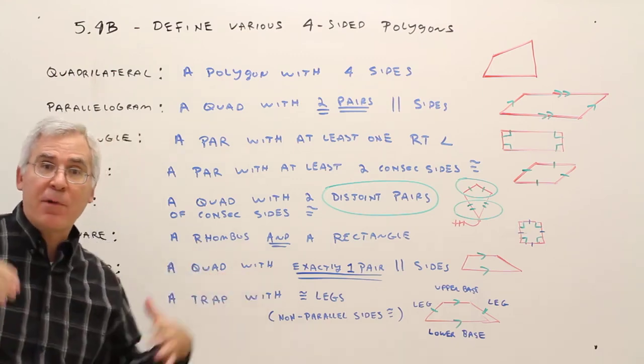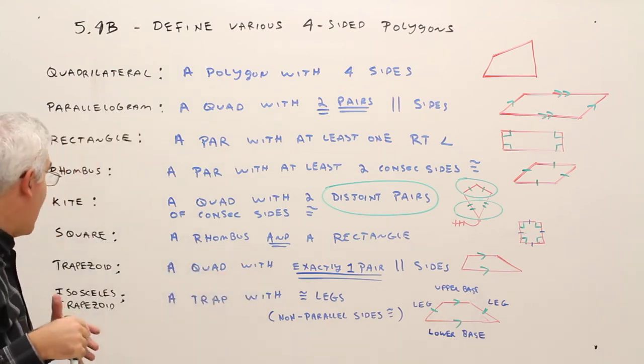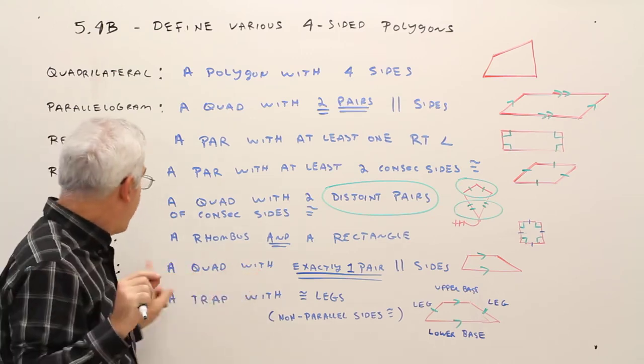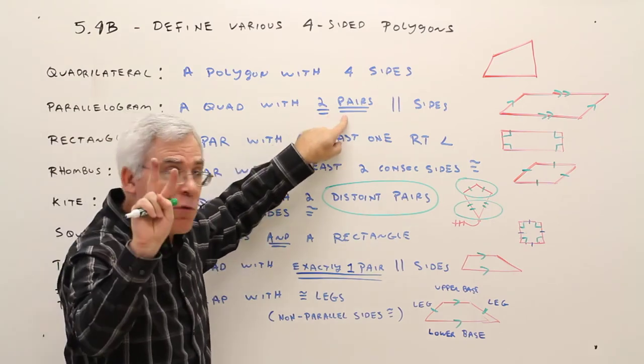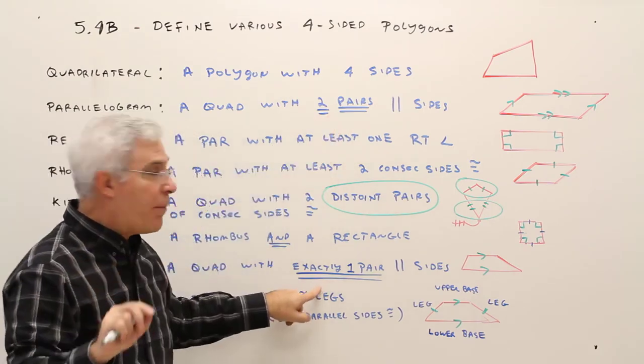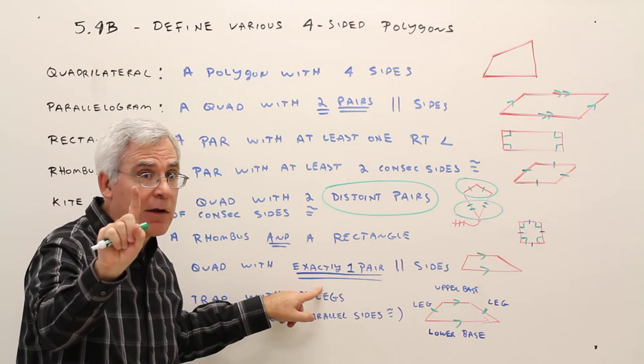A square is both a rhombus and a rectangle, just to emphasize that. Trapezoid is very similar to parallelogram, except parallelogram has two pairs of parallel sides. Trapezoid has exactly one, not two.